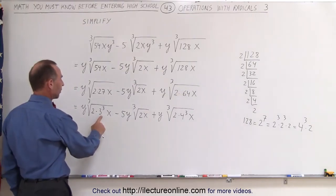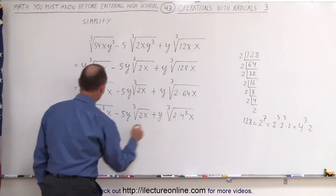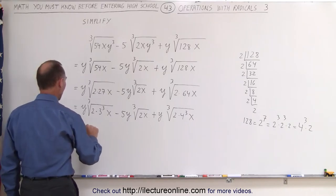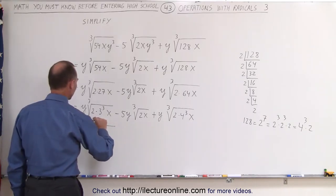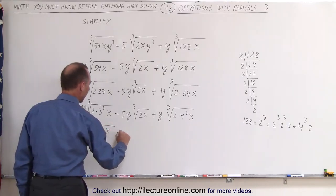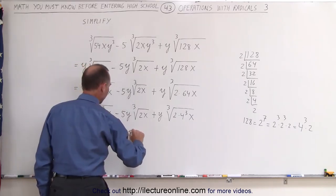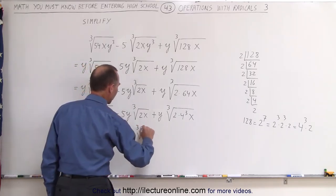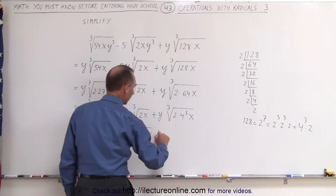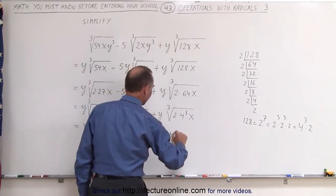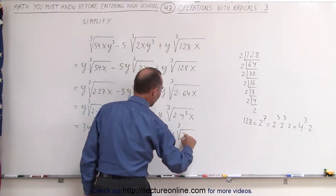So now we can take this outside the radical, we can take this outside the radical, so this becomes 3y times the cube root of 2x minus 5y times the cube root of 2x plus 4y times the cube root of 2x.